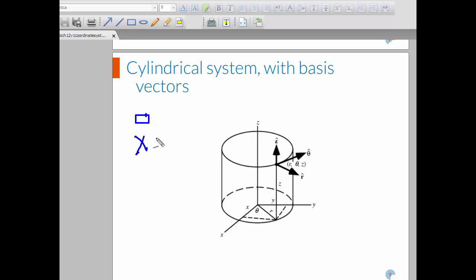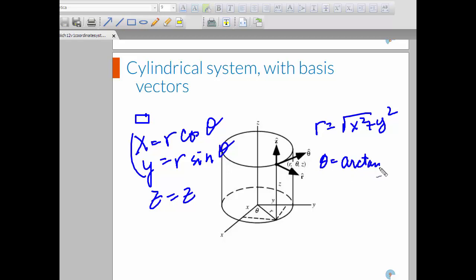Let me erase the board here and I'll write that. x is r cosine theta, y equals r sine theta, and z equals z. So, you just have polar here and z is just the same. Going the other way, r is the square root of x squared plus y squared. Theta is the arctangent of y over x. And, again, there's no change in z.